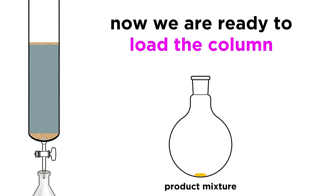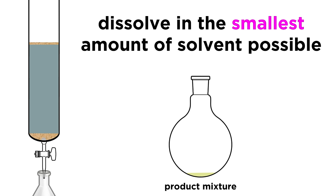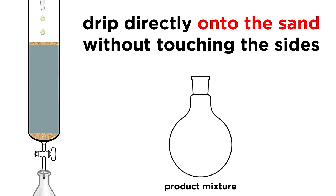Now we are ready to load the column. We take our isolated mixture, and we dissolve it in the absolute smallest amount of solvent possible that will enable us to pipette it onto the column, just a few drops if possible. While getting it in there, try not to get any of it on the sides of the column, we really want it to drip down directly onto the sand.